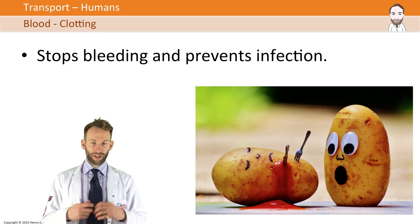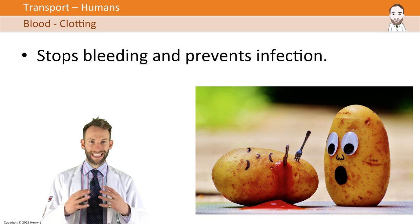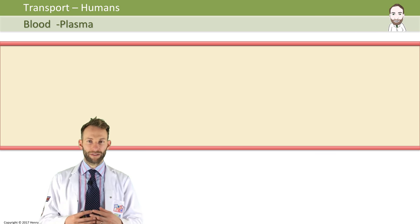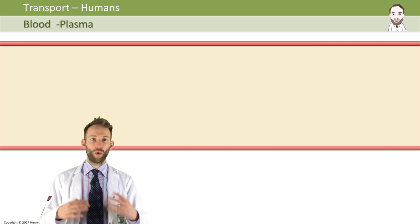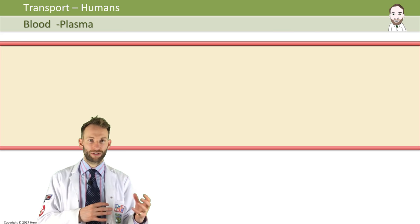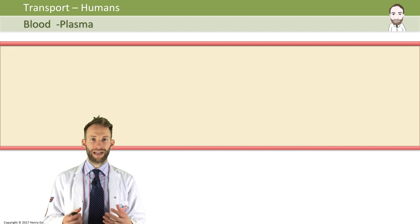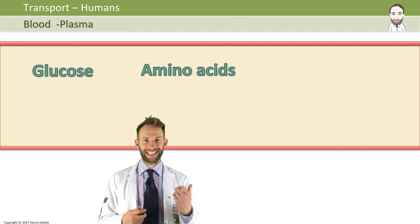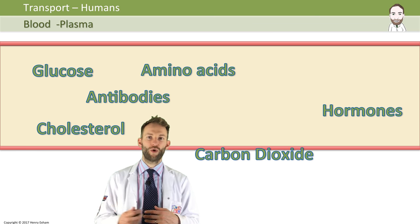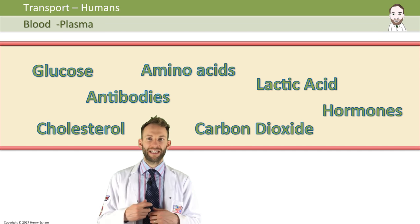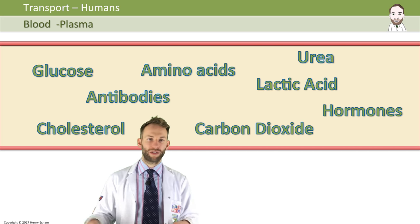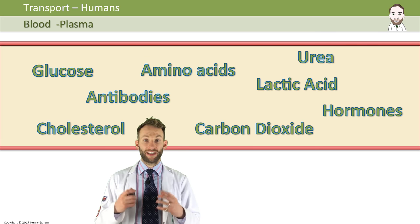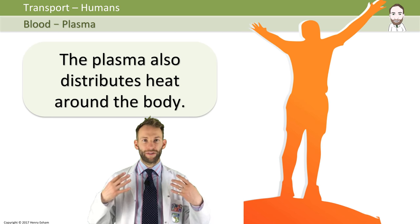As already mentioned, 55% of blood is actually just this liquid called plasma, which is mostly water — 90% of plasma is just water. But this is where all the other things that your blood transports are carried. Your red blood cells carry oxygen, but your blood needs to carry lots of other things around the body: things like amino acids, glucose, cholesterol, antibodies, hormones, carbon dioxide, lactic acid, and urea. All these things are dissolved in the plasma, and the plasma is what carries all of them around the body. The plasma also distributes heat around the body, which is very important in maintaining all our metabolic processes and keeping our enzymes working effectively.